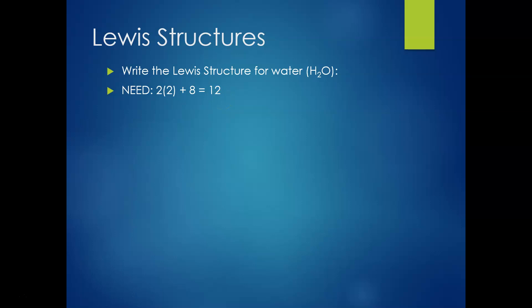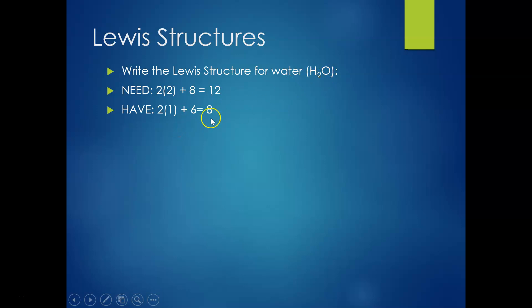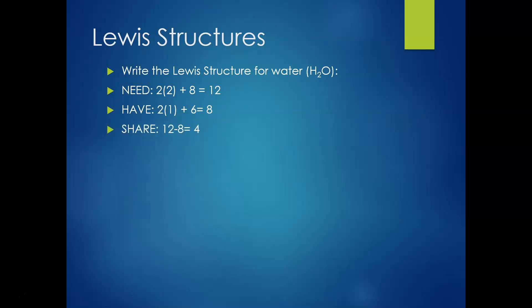Then for the 'have': hydrogen has one valence electron and there are two of them, giving two. Oxygen has six valence electrons, so two plus six equals eight. To find the share, subtract the have from the need: 12 minus 8 equals four. Dividing share by two tells me I can draw two lines.